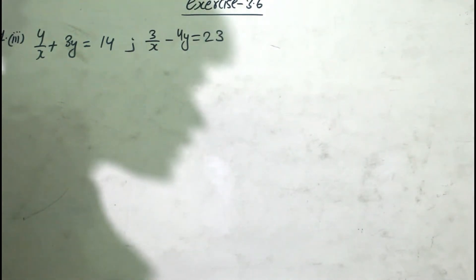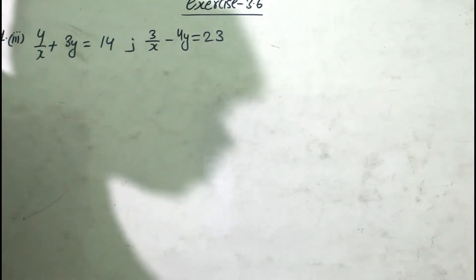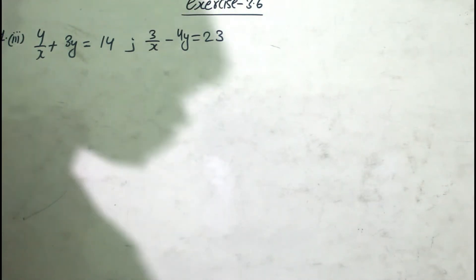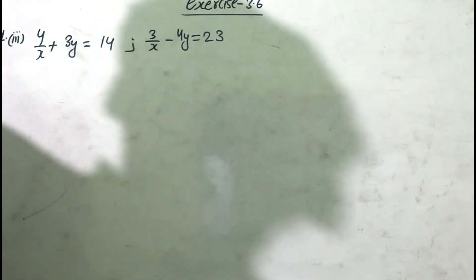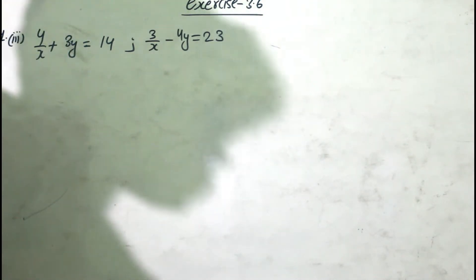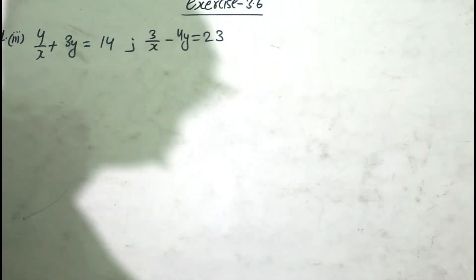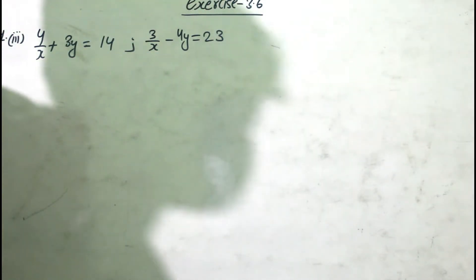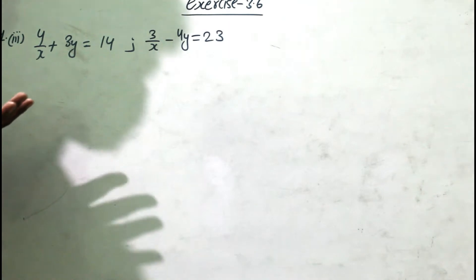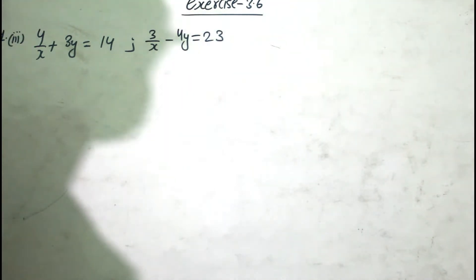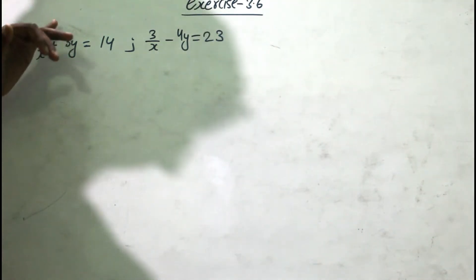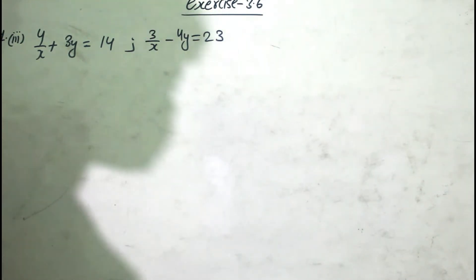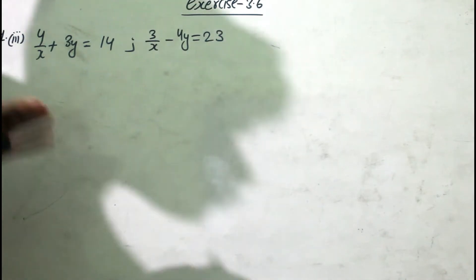Welcome to my YouTube channel Best Class. In this video we solve the problem of Exercise 3.6, question number 1, third question. The first equation is 4/x + 3y = 14, and the second equation is 3/x - 4y = 23. In this video a fraction is given, so we have to use the same method to solve the problem.